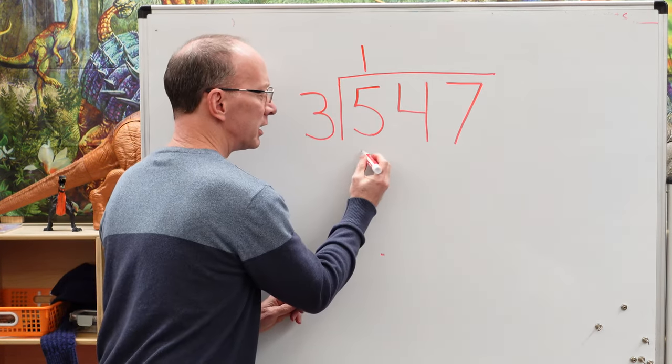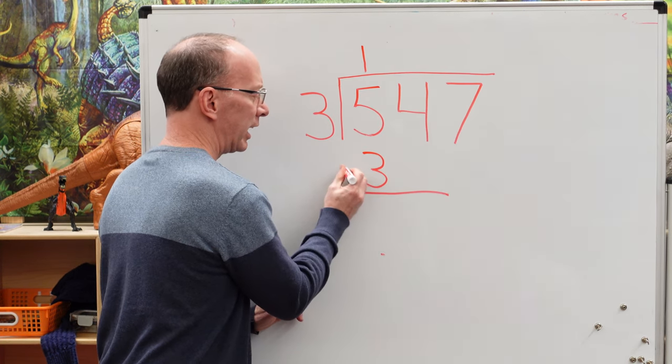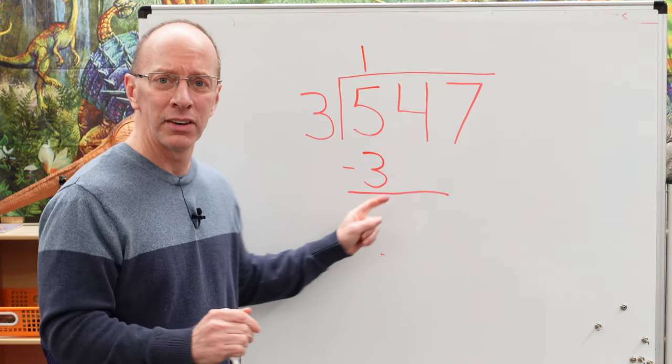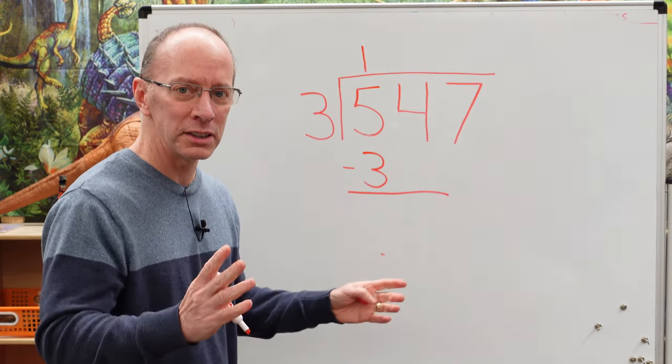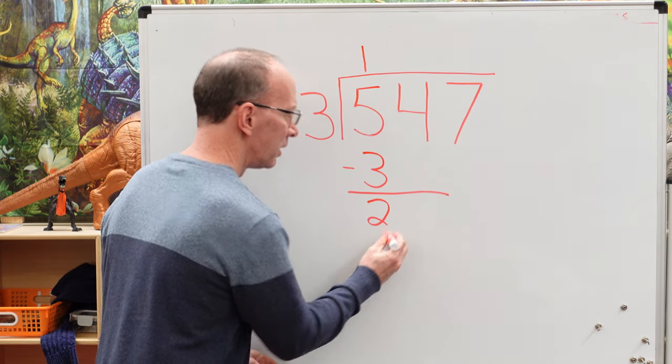3 times 1 is 3. 3 times 2 is 6. That's too high, so let's stay with just 1. I put the 1 right here. I'm dealing with that number here, not this one yet. So 1 times 3 is 3. Put the 3 right there, a little line, and we're going to do some subtraction. 5 minus 3 is 2.